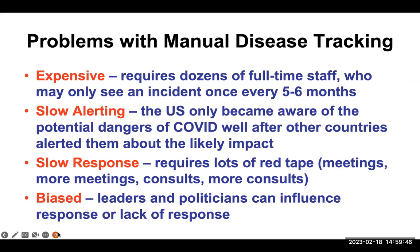However, there are problems with the CDC's manual approach, laid bare with COVID. Having this large center with dozens of people full-time is expensive, especially if they only see a big incident every five or six months or years. It also means that people who may only read English-language text are not aware of events that happened elsewhere, leading to slow alerting and slow response. When working with people, they need meetings, consultations, and consultants, leading to red tape. It also leads to biases with leaders and politicians influencing the response or lack of response — which was laid bare with the CDC.